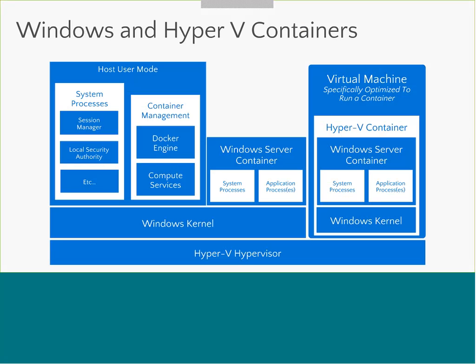This diagram shows the same thing in more detail. On the left you can see user processes running on a system. In the middle is a Windows Server Container — it shares the Windows kernel but runs in an isolated context. On the right is a Hyper-V container, where the container executes inside a hypervisor on top of a minimal Windows kernel.